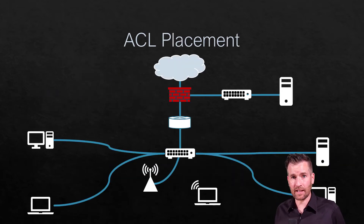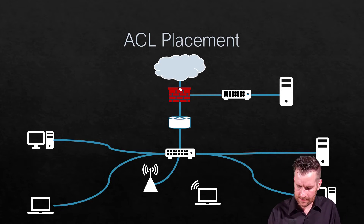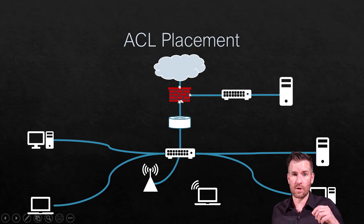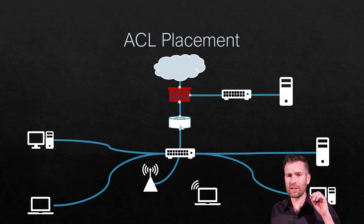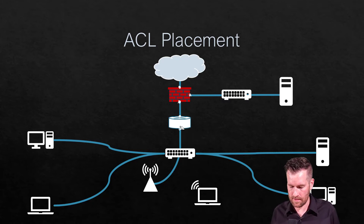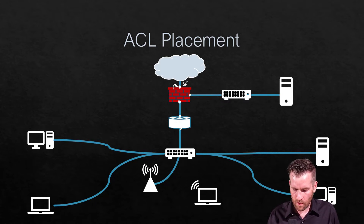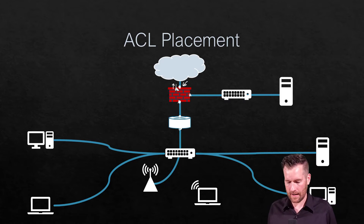Access control lists are put onto interfaces. You can put an ACL on any interface of a firewall or router. Not only do you put it on an interface, but you also specify a direction for each interface — either outgoing or incoming, also called egress or ingress. Ingress means coming in; egress means going out.